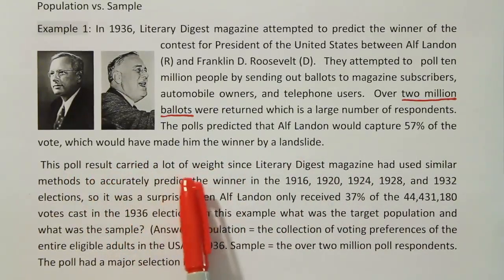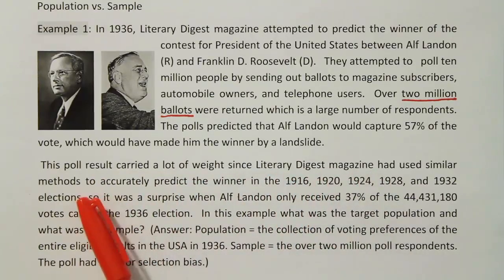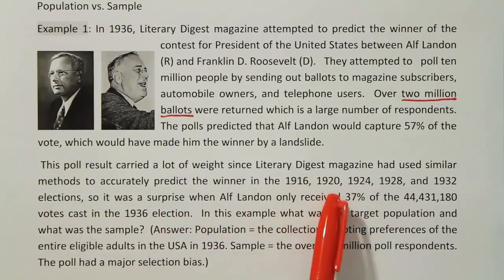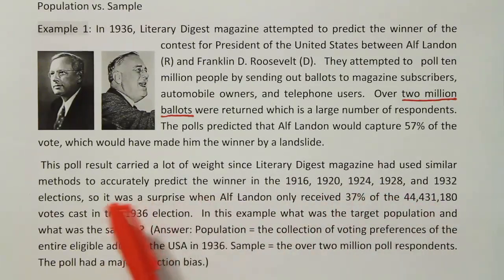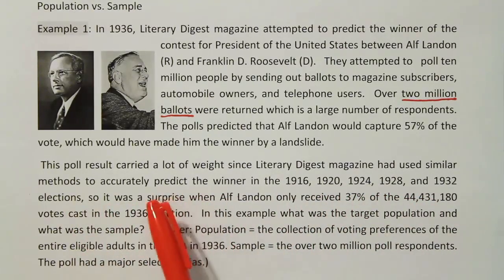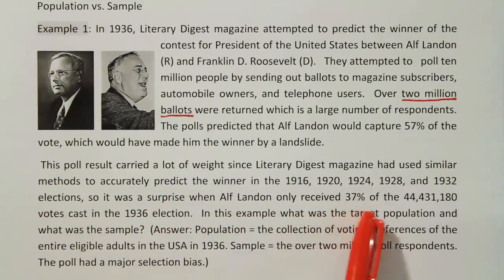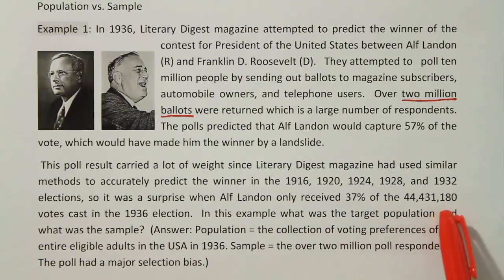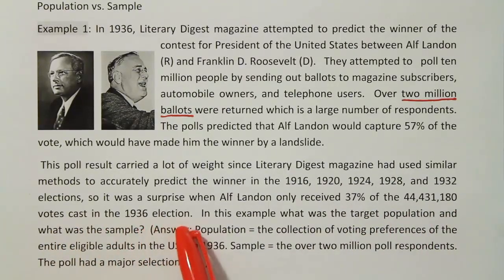This poll result carried a lot of weight since Literary Digest magazine had used similar methods to accurately predict the winner in the 1916, 1920, 1924, 1928, and 1932 elections. So it was a surprise when Alf Landon only received 37% of the 44,431,180 votes cast in the 1936 election.